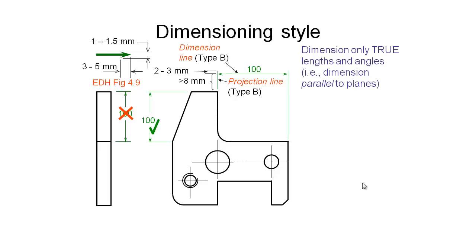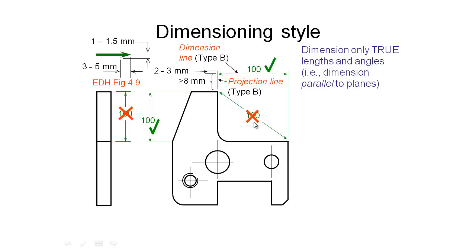Here's an important point: if we're dimensioning a horizontal distance with a value of 100, we wouldn't do that with arrows going diagonal. The dimension line itself represents the distance parallel to that line, so a diagonal arrangement would actually measure something like 120 or 130 millimeters. Always make sure the dimension line represents the actual quoted dimension and that you're not doing anything strange on diagonals.